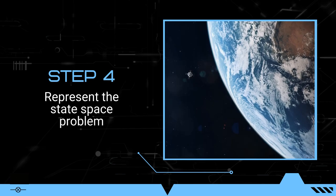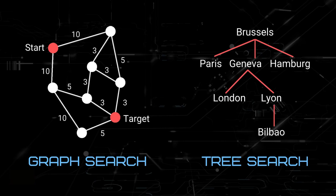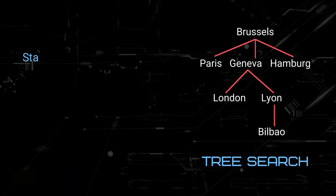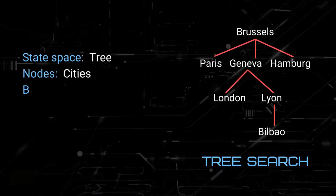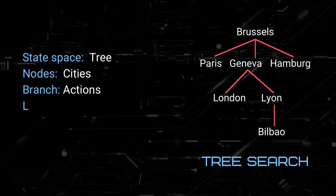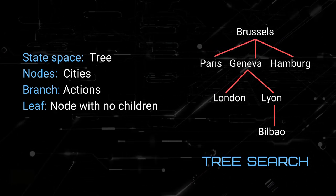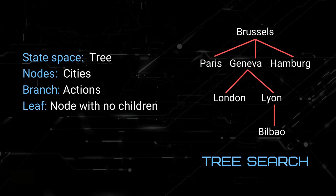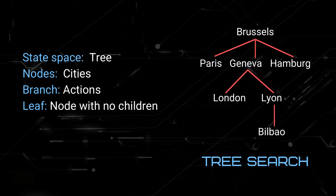The last step is to represent the state-space problem. There are two ways of doing this, either by using a graph or a tree. If the state-space is a tree, the nodes of the tree will be the cities or states like Paris and Lyon. The branches are actions, while the leaves are nodes without children. In this example, the leaves are Paris, Hamburg, London, and Bilbao.